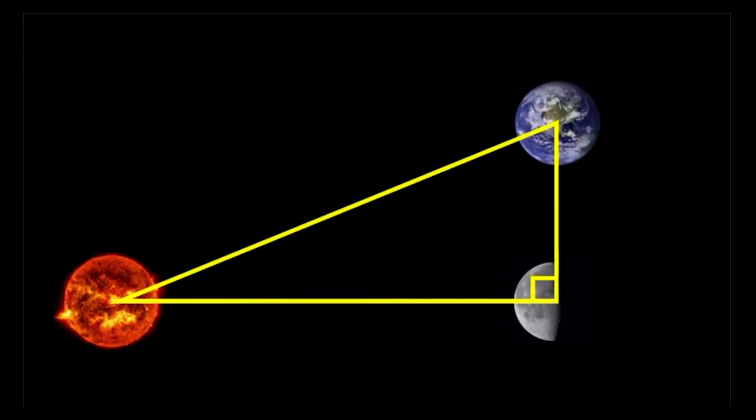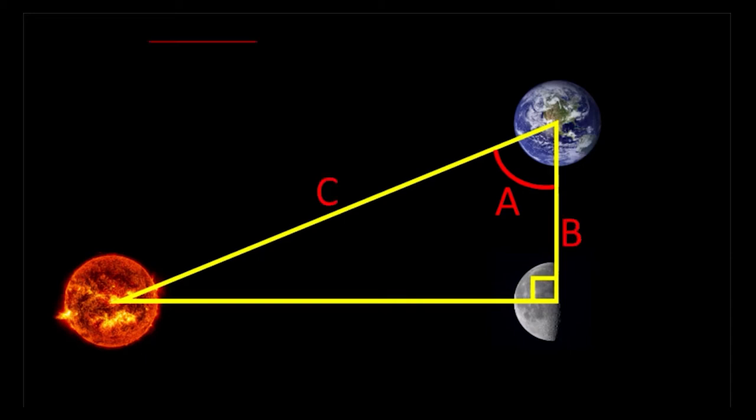When we see a quarter moon from Earth, that means that the Sun, Moon, and Earth have formed a right triangle. Measuring our corner of the triangle lets us figure out how far away the Sun is. I'm not going to ask you to do that trigonometry. Just realize this isn't that different from your high school math homework.